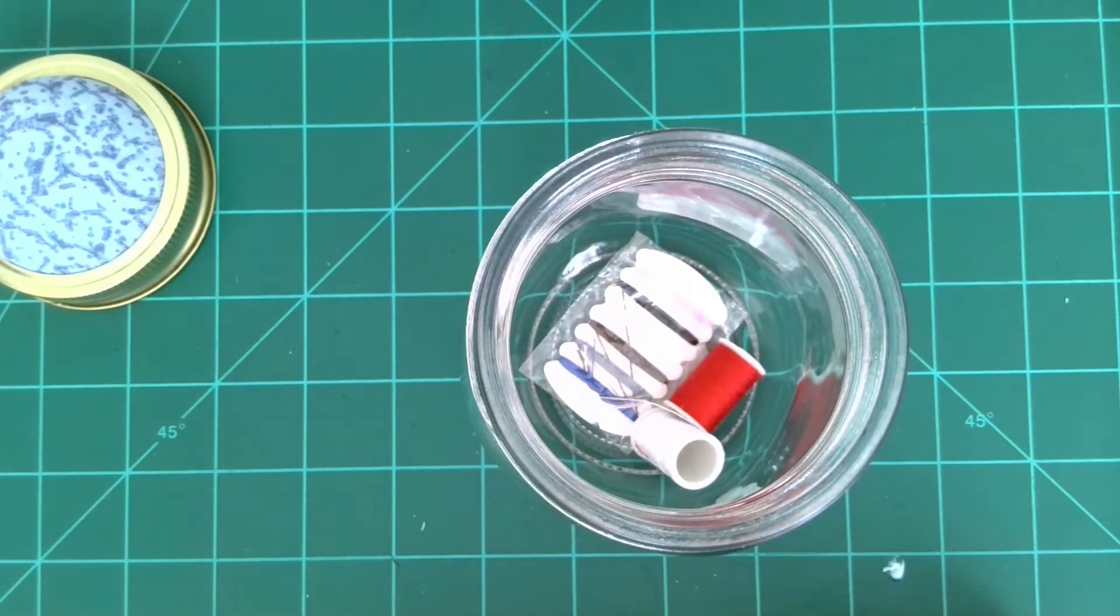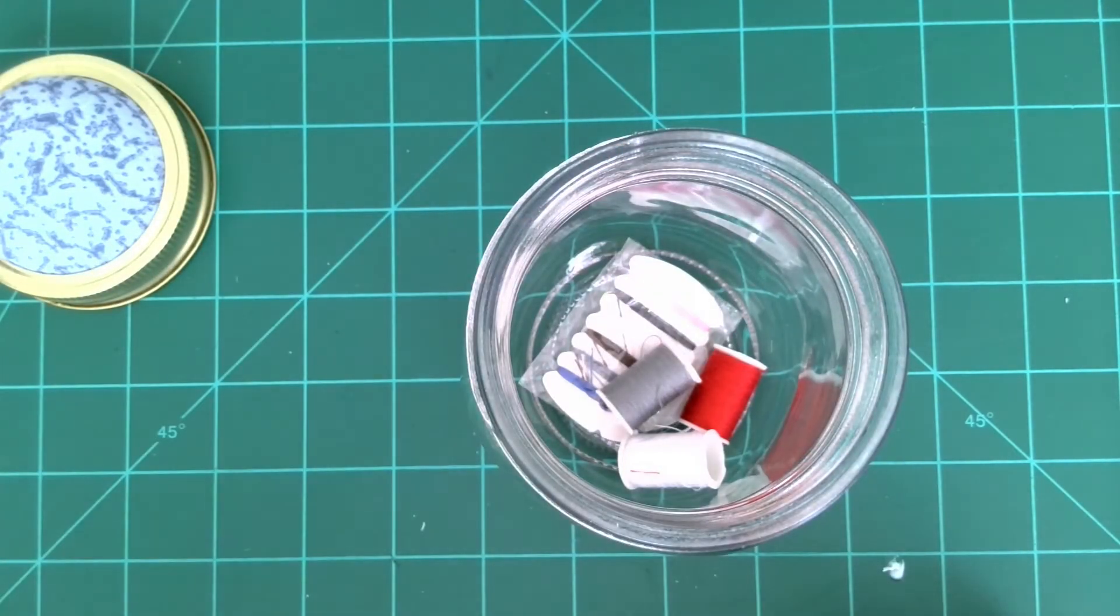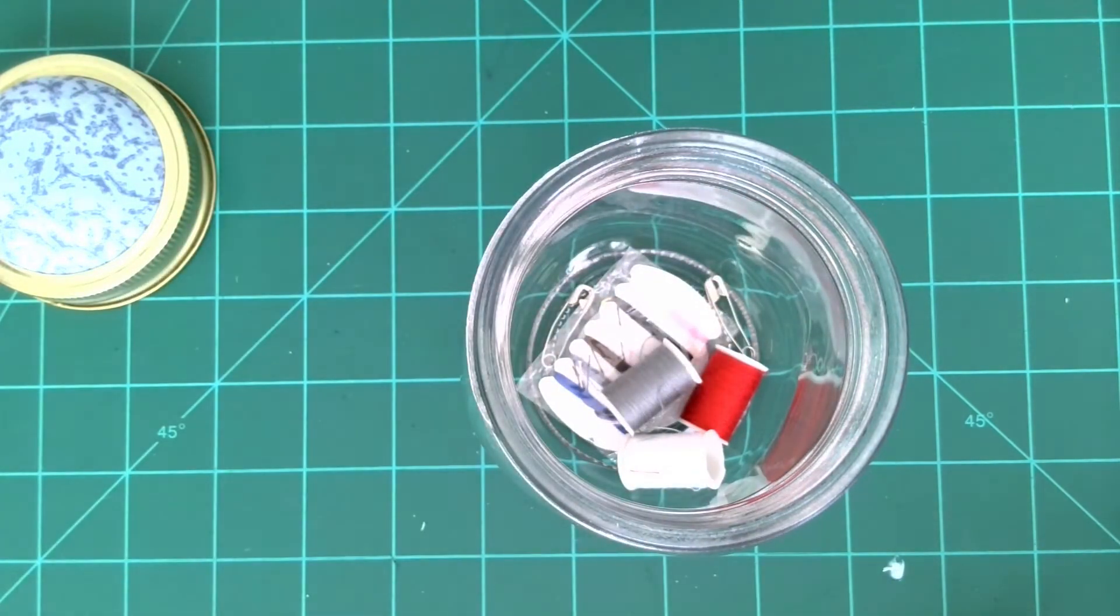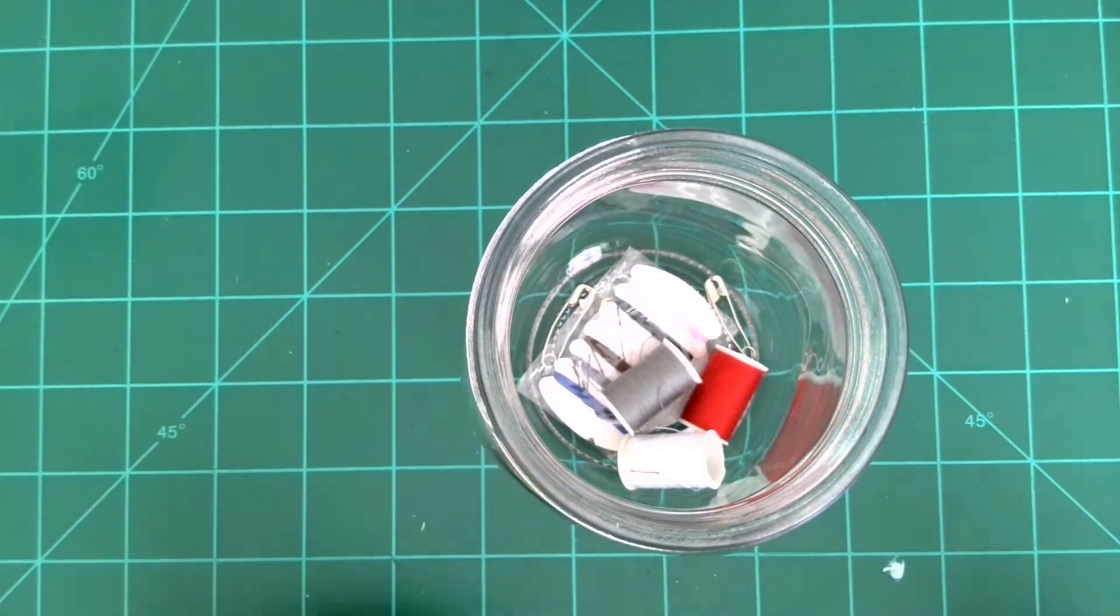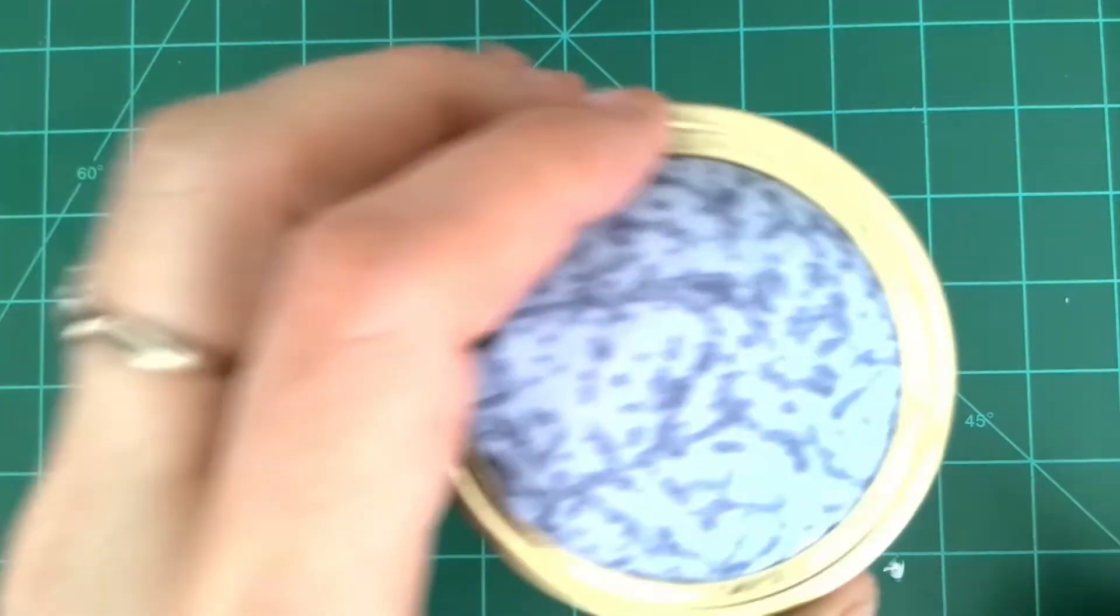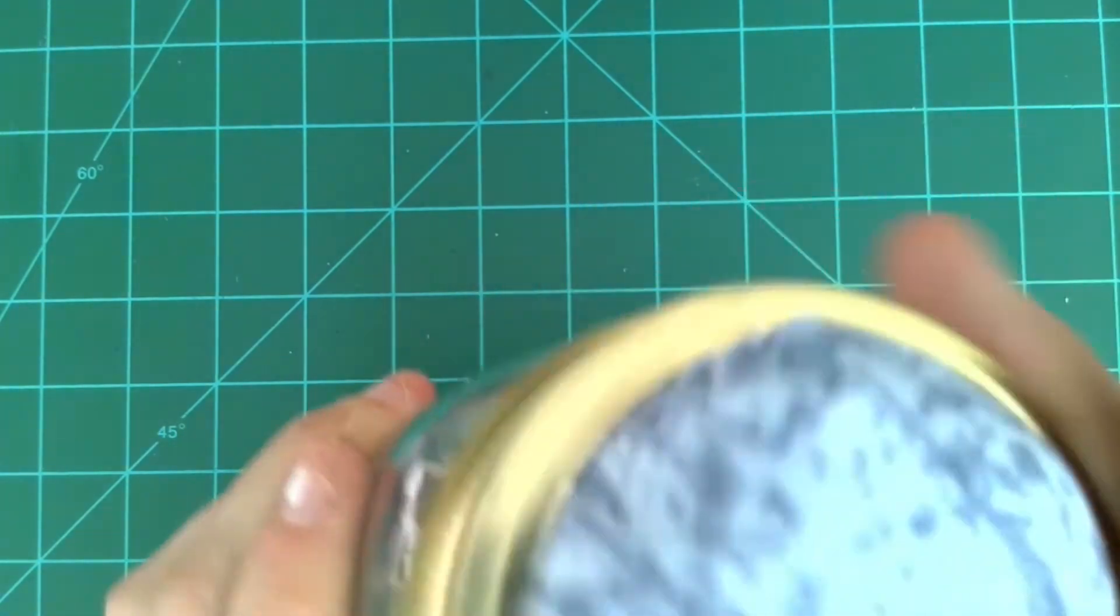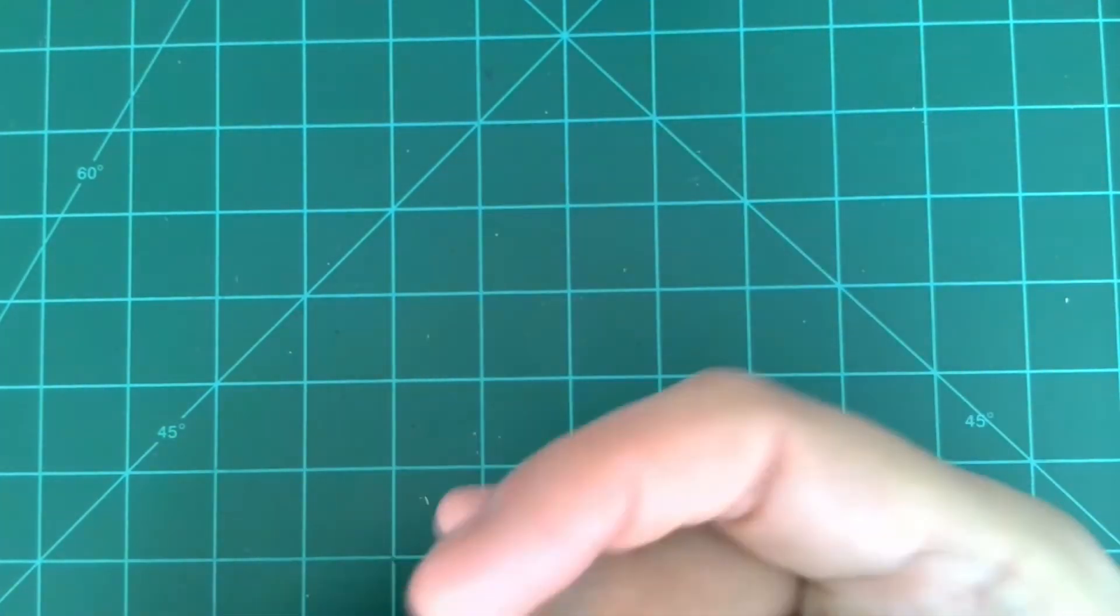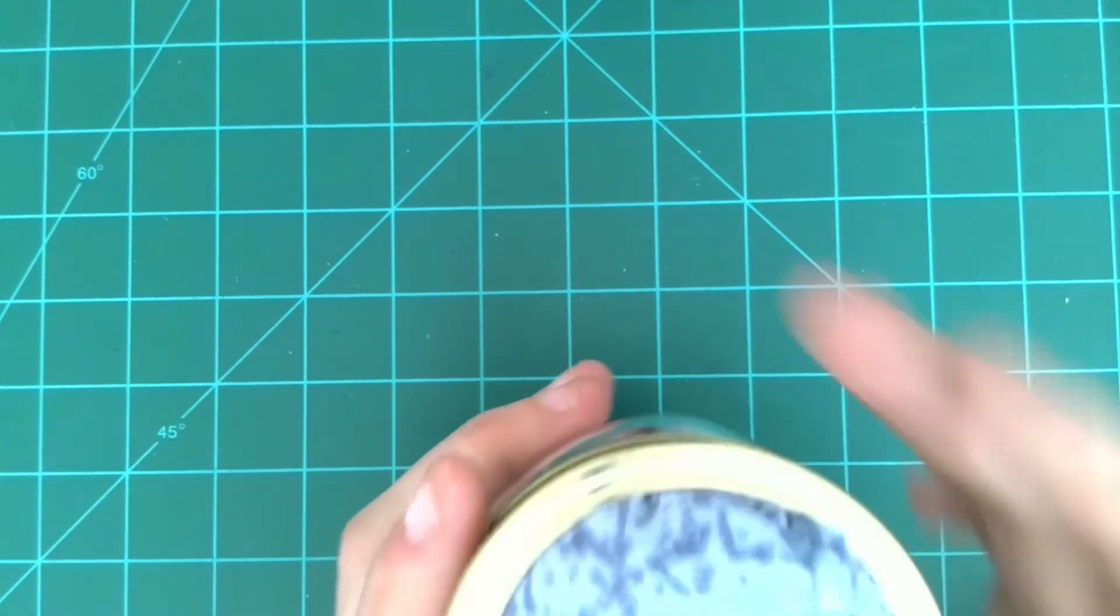I put a few spools of thread in there. I've got some safety pins, whatever you would like to put in there is your choice. And then you will just affix your top of your jar just like that.